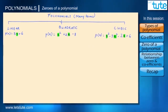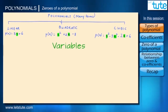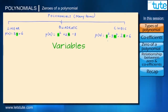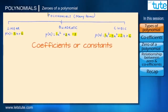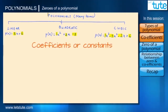The letters that we see have unknown values and they are called Variables. Here we have just one variable, that is x. The numbers that we see before the variables are called coefficients or constants.